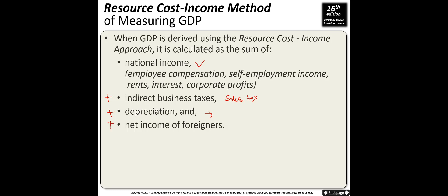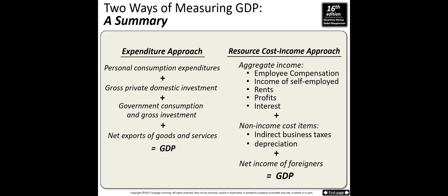When GDP is derived using the resource cost-income approach, it starts with national income — wages, self-employment income, rents, interests, and corporate profits — plus indirect business taxes such as sales tax, plus depreciation for wear and tear on machines, plus net income of foreigners. You will arrive at the same GDP number whether you use the expenditure approach or the income approach.